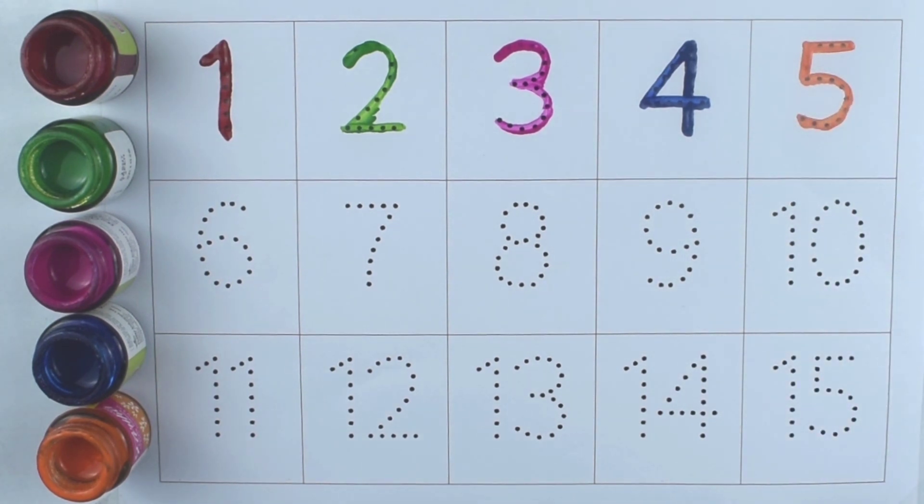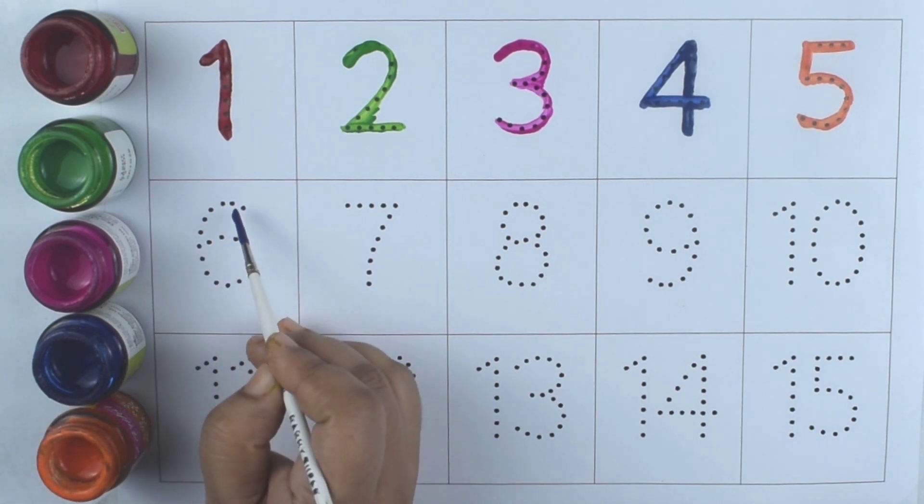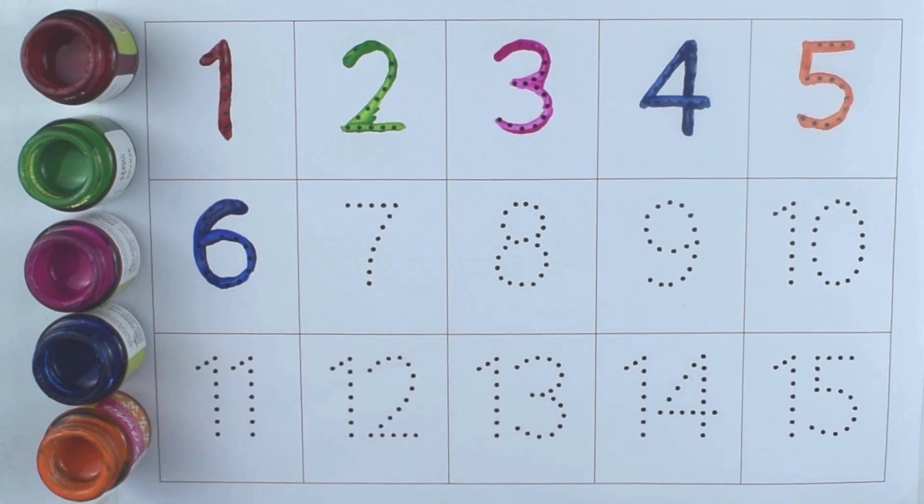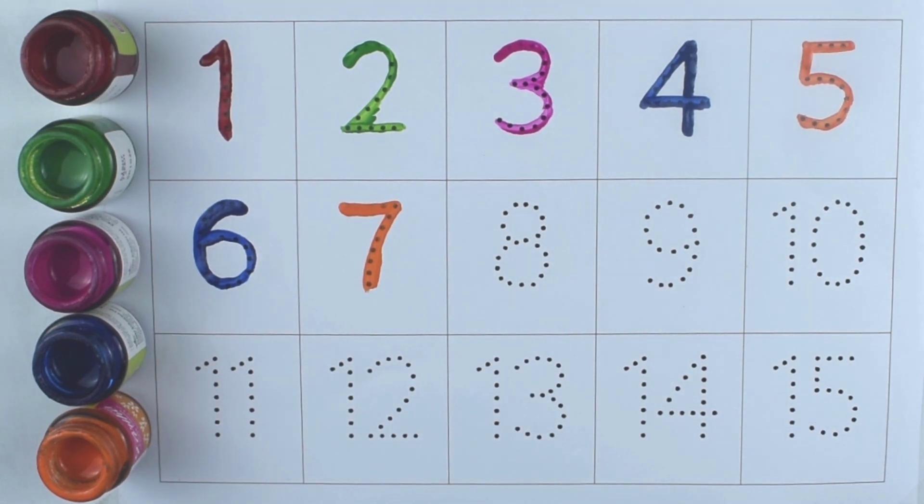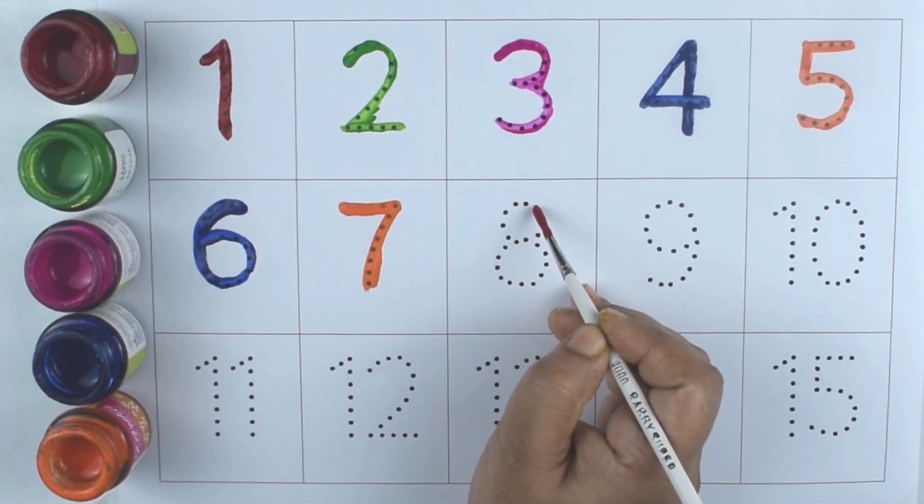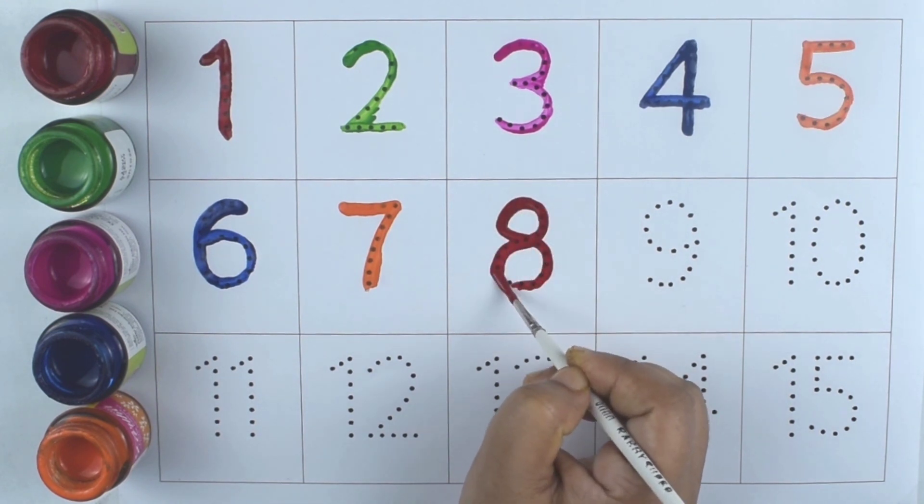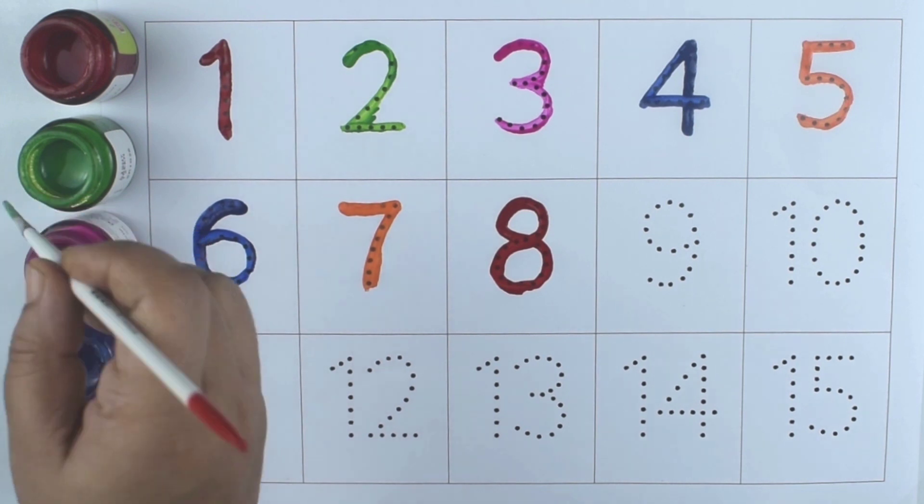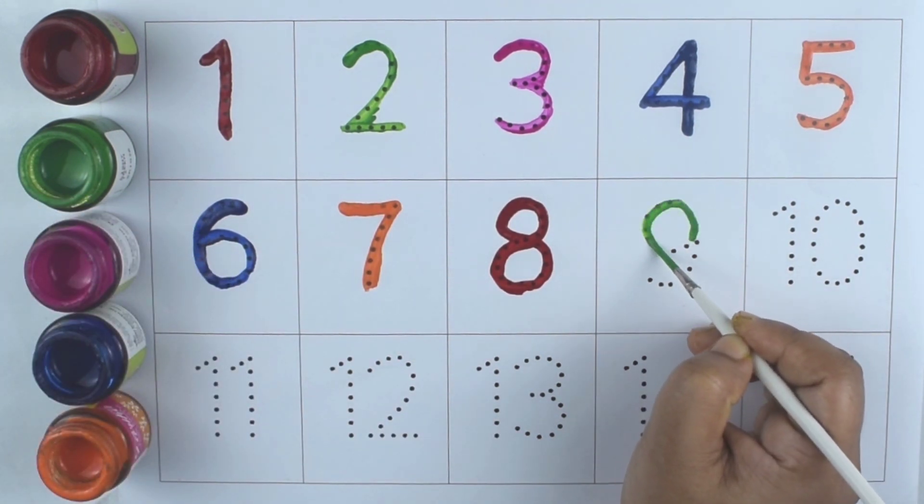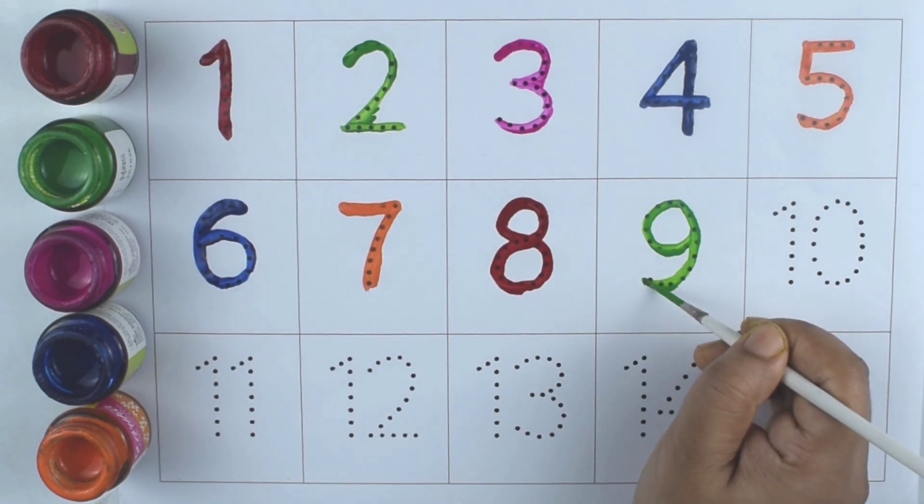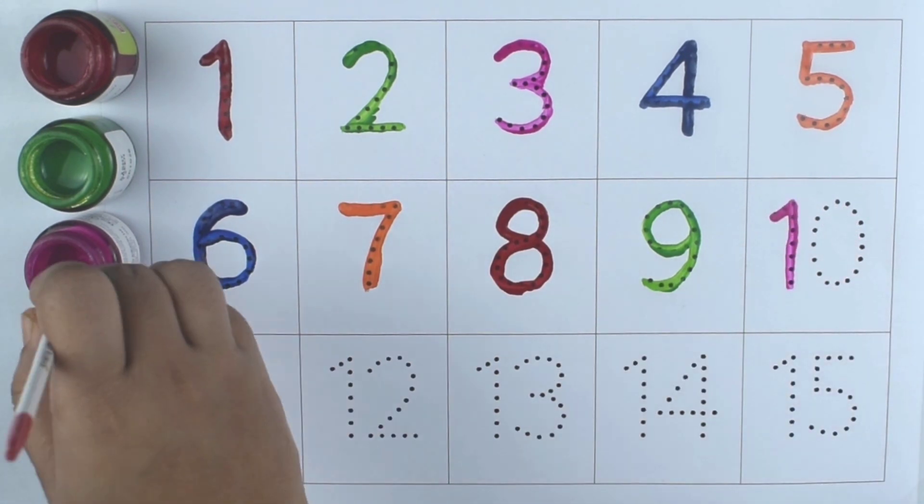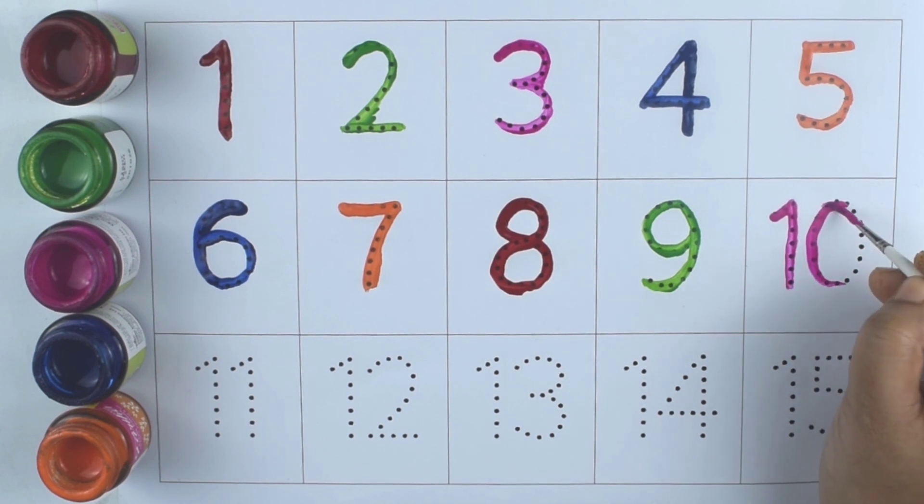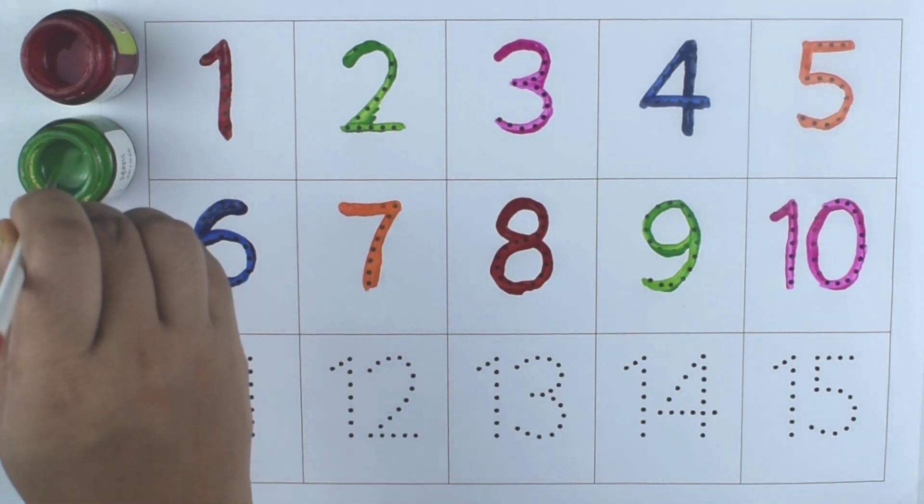Blue color. Six, orange color. Seven, red color. Eight, green color. Nine, pink color. Ten.